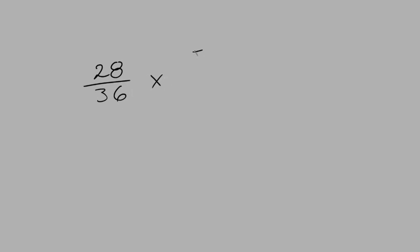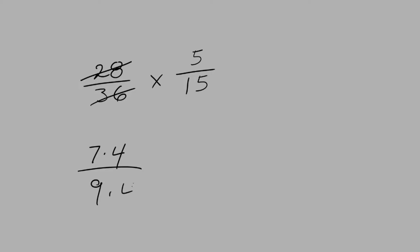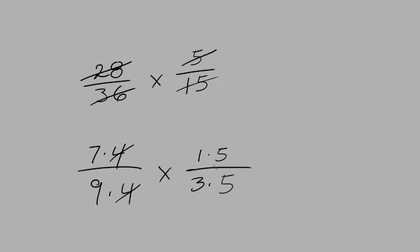Let's say you had a question like 28 over 36 multiplied by 5 over 15. 28 and 36 are both divisible by 4, so 28 can be 7 times 4 and 36 can be 9 times 4. And 5 over 15 are both divisible by 5, so 5 can be 1 times 5 and 15 can be 3 times 5. Then we can cancel out any common factors in the top and bottom numbers — we have a 4 and a 5 that can be cancelled out.